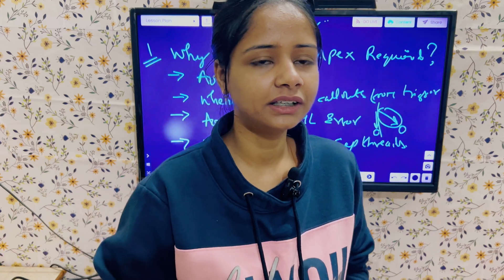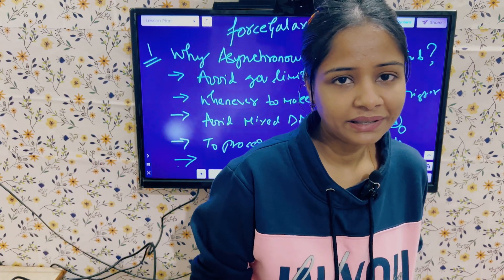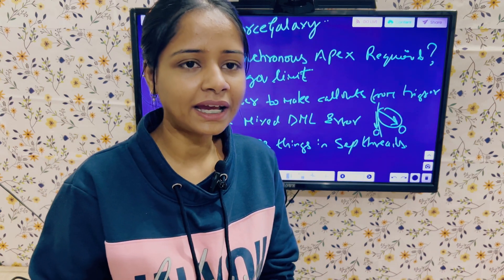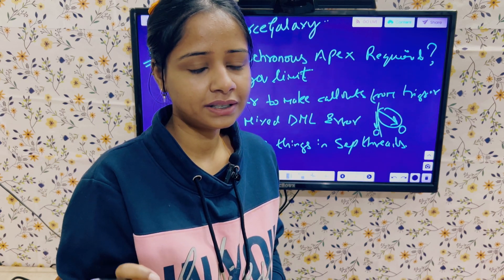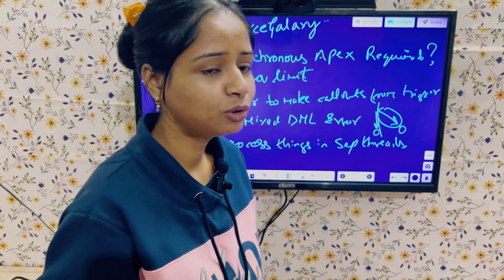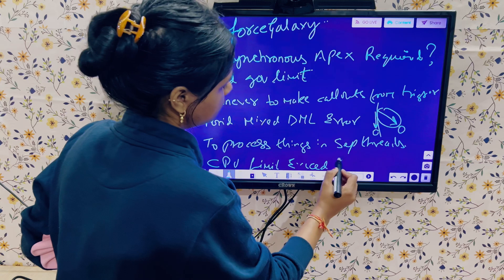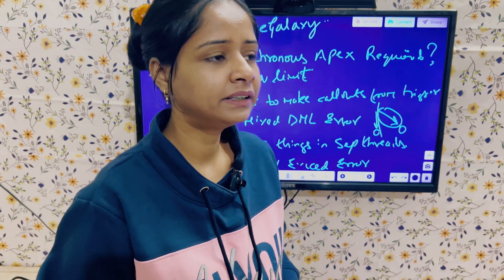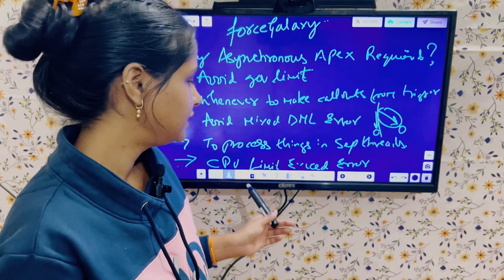Another important point is the CPU limit exceeded error. We get this error whenever the logic we write is taking more time than the allowed CPU time limit for processing. If the logic exceeds that time limit, Salesforce throws a CPU limit exceeded error. To avoid this, we first check if we can reduce the number of loops, DML operations, or SOQL queries in the same logic. If they are not manageable, we move the logic to asynchronous Apex — such as batch Apex — to avoid the CPU limit exceeded error.